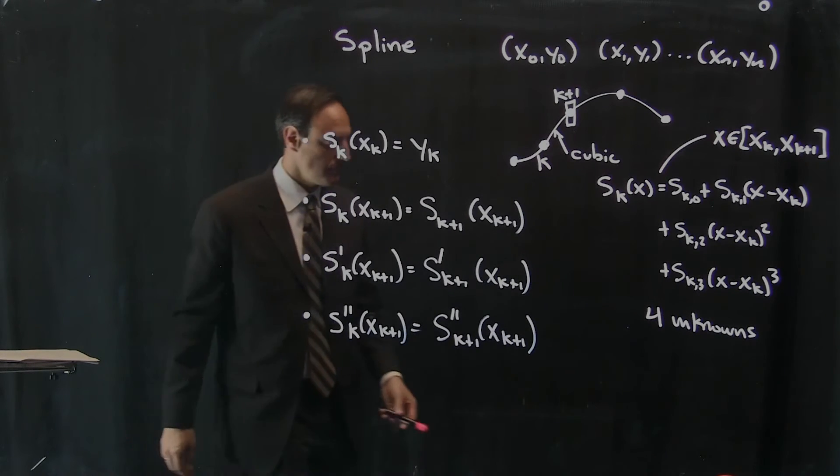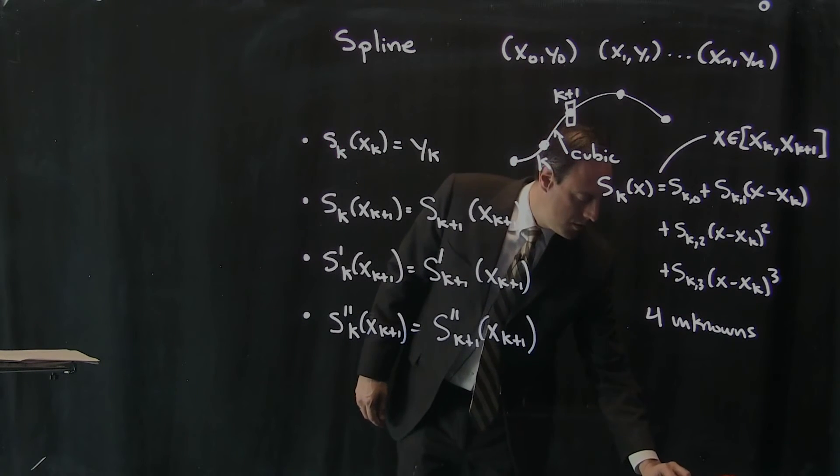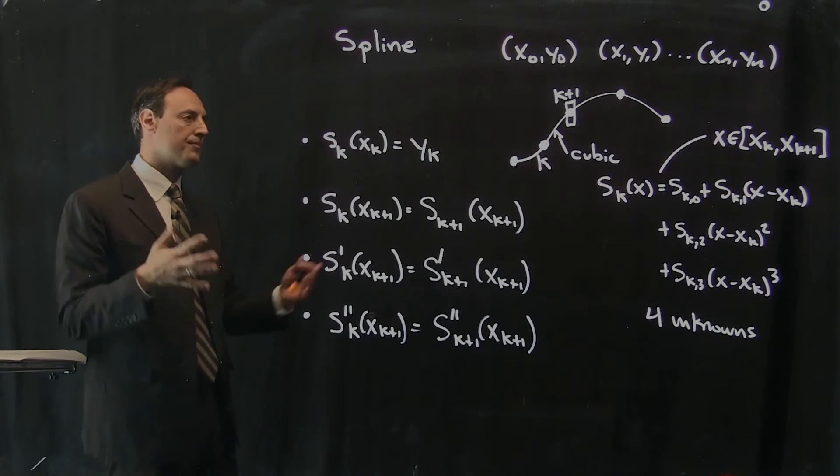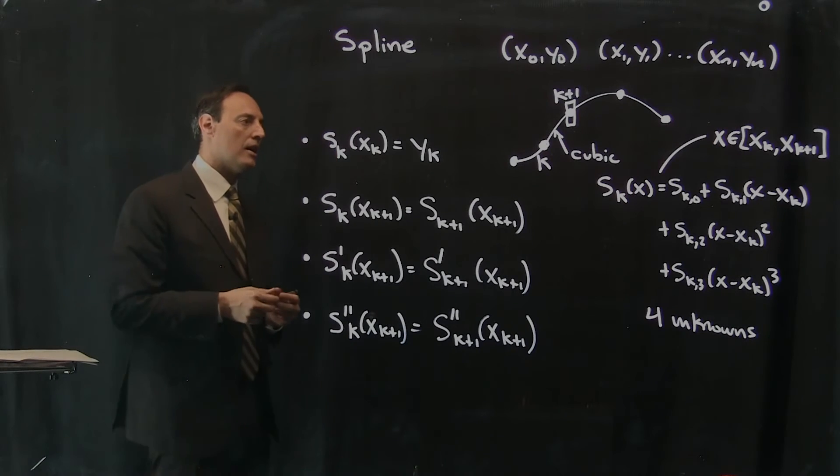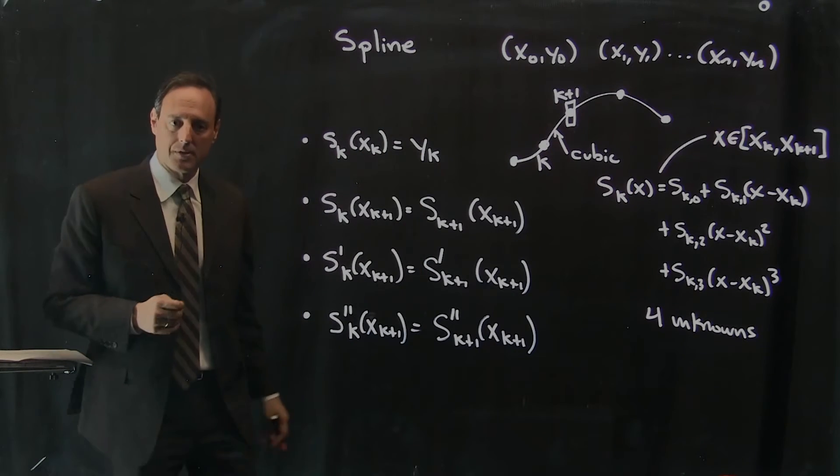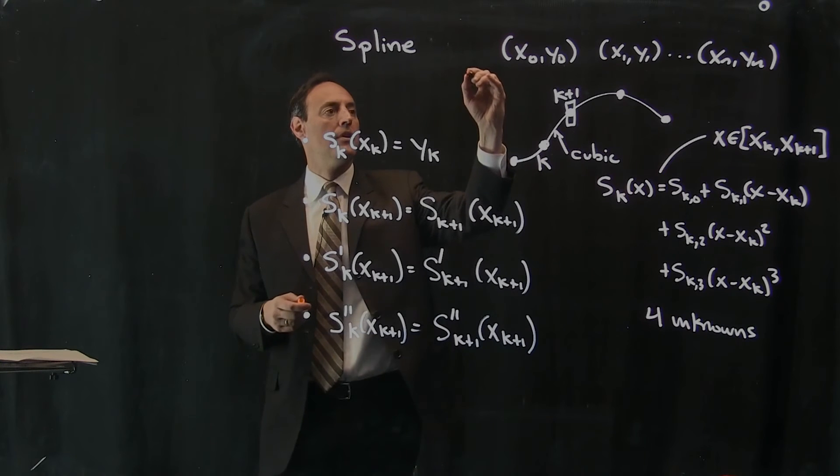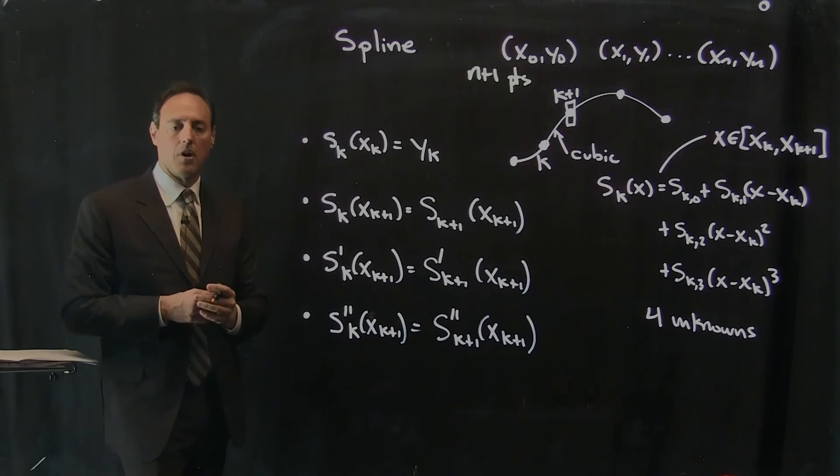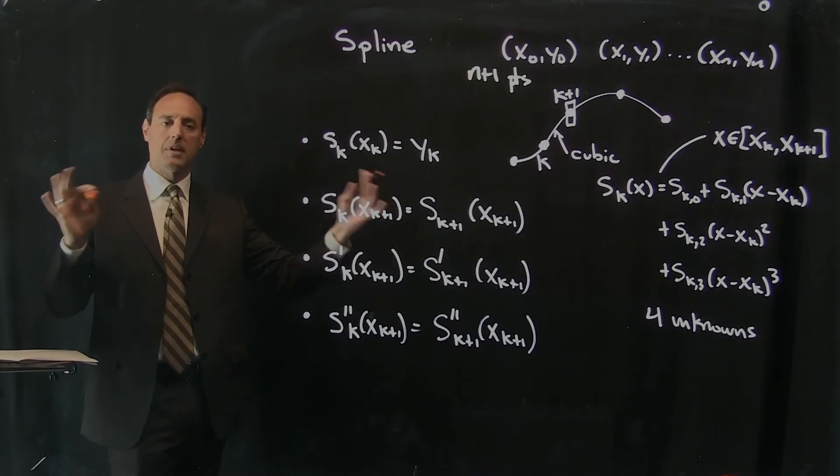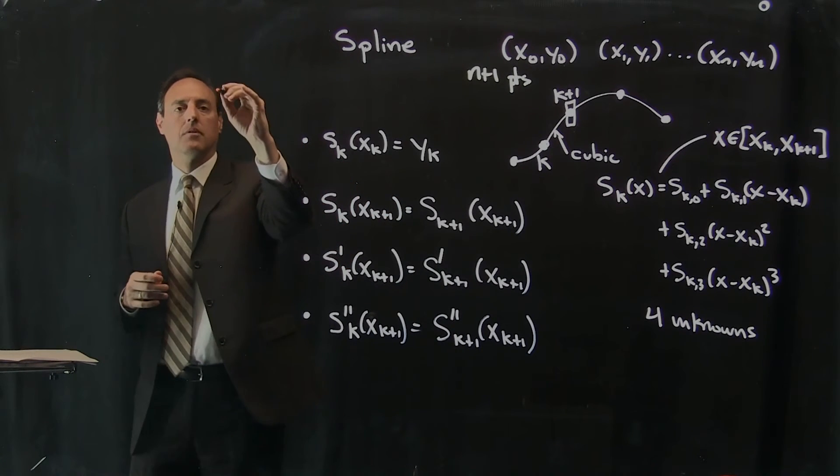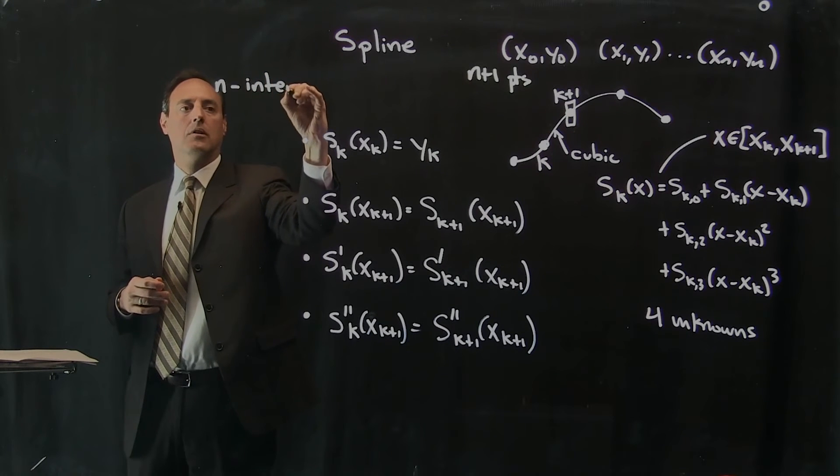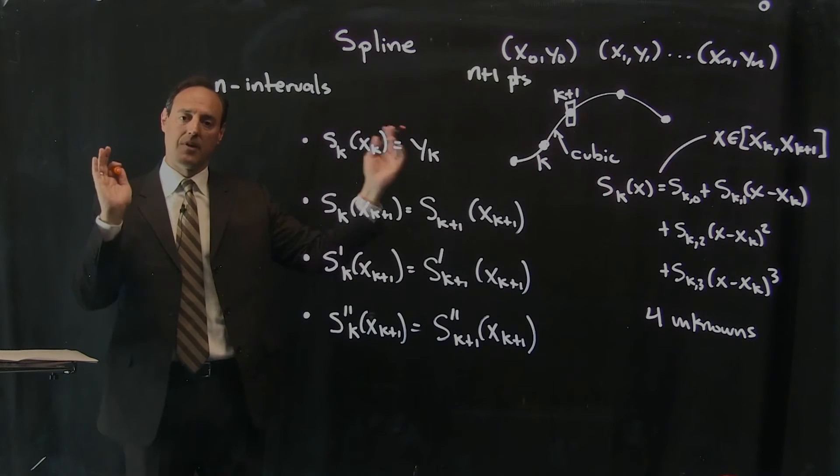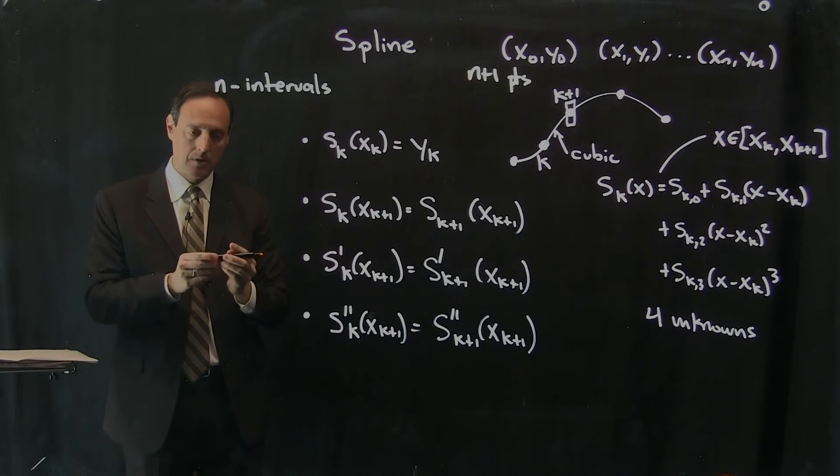Let's do a count. I have this many constraints. So first of all, if I have n plus 1 points, right, which I do right here. So there's n plus 1 points. How many intervals are there? Well, if there's n plus 1 points, I have n intervals, right? The intervals are, for instance, from x0 to x1, x1, x2. So if n plus 1 points, I have n intervals. Okay?